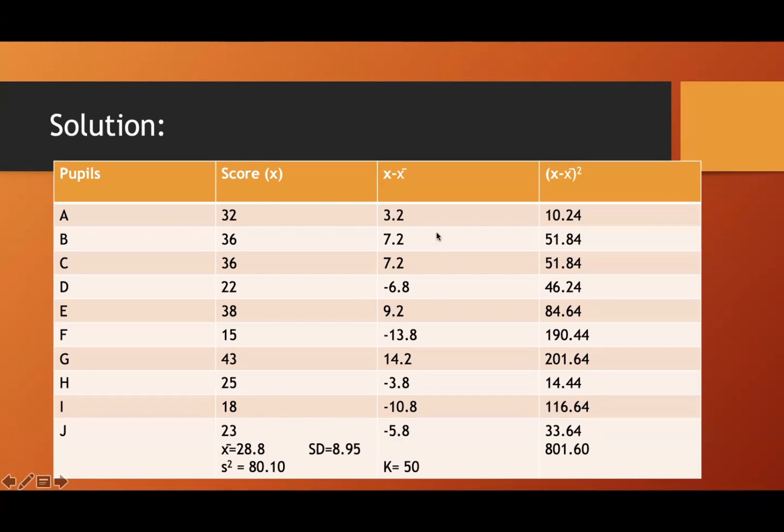So 3.2 squared, 10.24. 7.2 squared, 51.84. 7.2 squared, 51.84. Negative 6.8 is positive 46.24, and so on. After that, you get the total. The total here is 801.60.